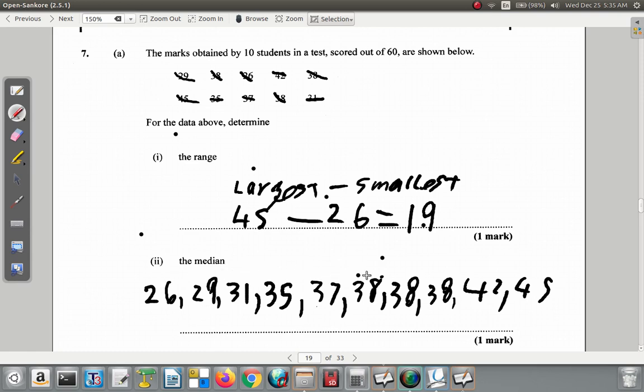So let's see which is the median. 1, 2, 3, 4, 5, 6, 7, 8, 9, 10. It's an even number of items, 10 of them. So let's say you have 1, 2, 3, 4 to the left, 1, 2, 3, 4 to the right. These two are in the middle.